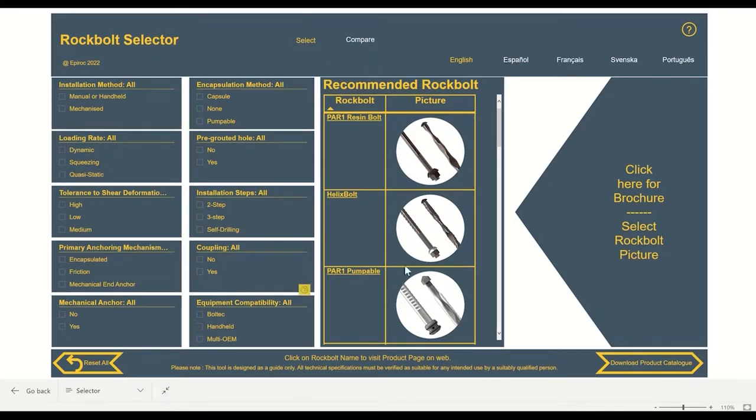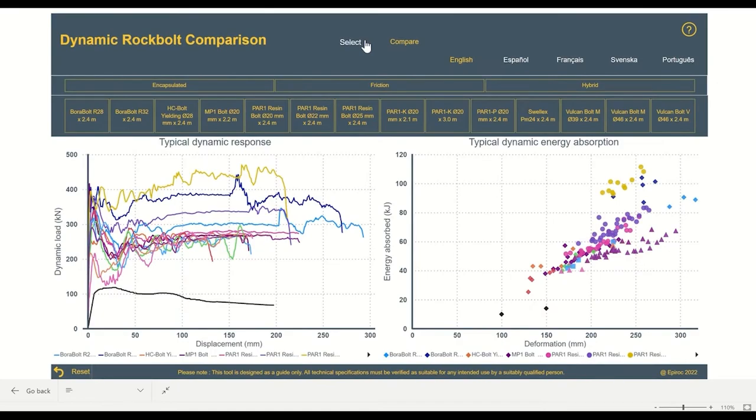The Select option is the selector that helps you identify bolts that you maybe can use in an application. The Compare tool takes you through to another web page, which now has a comparison tool for our range of energy absorbing RockBolts. This tool allows you to take different dynamic bolting options and see how they perform relative to each other.